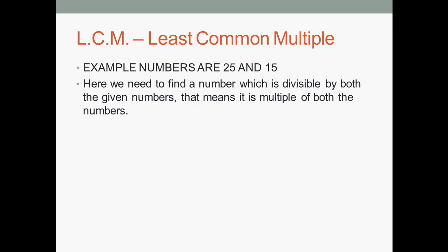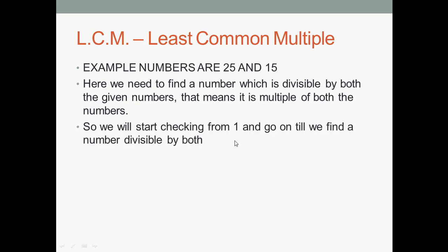You have to find a number that is divisible by both of these numbers — meaning a number that can be divided from 25 and also from 15. So we need to find a number which is divisible by both the given numbers; that means it is a multiple of both the numbers. For example, 50 is one such number divisible by both. But the Least Common Multiple is the smallest one.